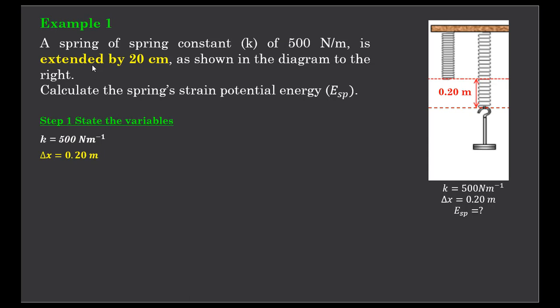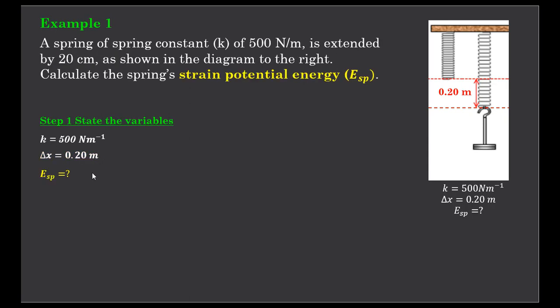Next bit of data we can extract from the question is there's an extension of 20 centimeters. Delta x equals 0.20 meters. So delta x means extension or in some cases compression. The equation we're using is expecting the distance to be in meters, and so it is not written as 20 centimeters for our formula. It's written as 0.2 of a meter.